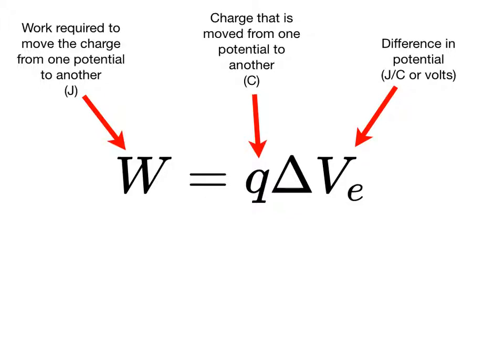If a positive charge is moved to a point of higher potential, the work done on the charge is positive. If a negative charge is moved to a point of higher potential, the work done on the charge is negative.